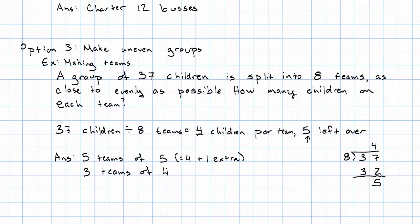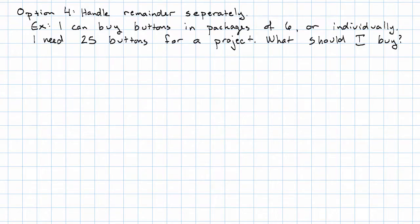One more option that keeps us within the whole numbers. Sometimes we just handle that remainder separately. So, an example of this might be buying things. So, maybe I can buy buttons in packages of 6, or I can buy them individually. I need 25 buttons. What should I buy? Well, 25 buttons divided by 6 buttons per package. I know I'm going to need to know what the remainder is.